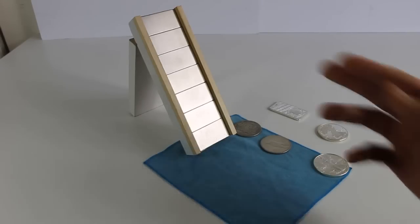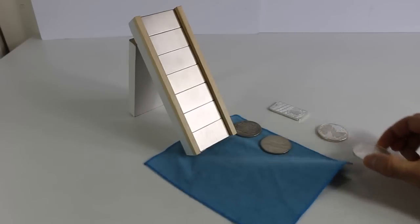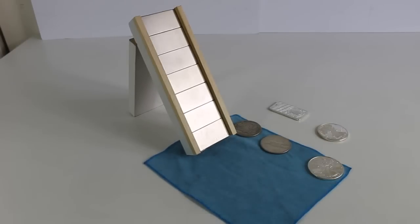So as real silver moves down this magnetic slide, it's going to be slowed down. It's going to repel and move at a much slower speed than fake silver. Fake silver will just come down the slide with no resistance at all. You'll see that when I do the demonstration.